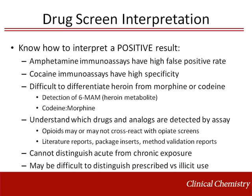For example, hydrocodone is an opioid that is highly cross-reactive with opiate screens, whereas a different opioid, oxycodone, will only be detected by the same assay at high concentrations. Information describing the analytes and degree of cross-reactivity and effects of interference for a specific assay may be available in method validation reports, the manufacturer's package insert, and in reports published in the scientific literature.